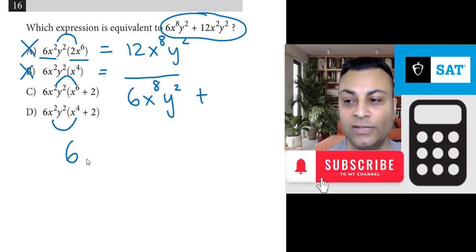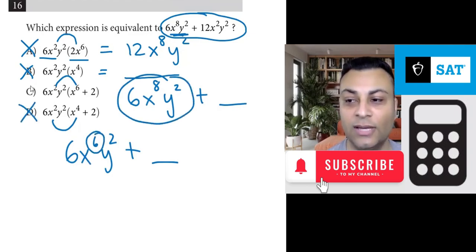6, x squared and x to the fourth give you x to the sixth y squared. And you still have a second term. However, 6x to the eighth y squared is correct here. And this one doesn't have an eight over here. So d is wrong. And c is correct.